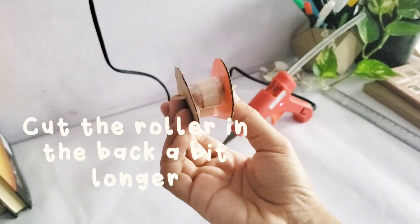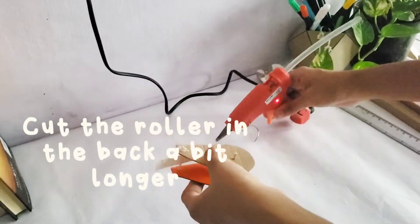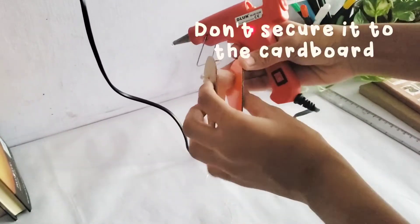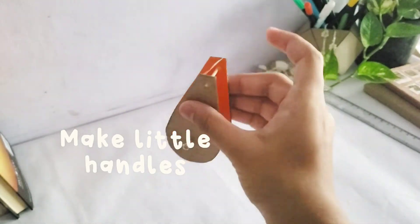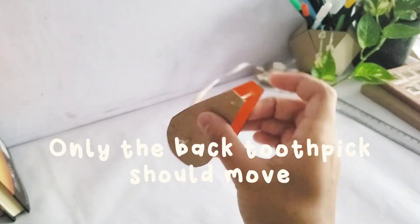For the toothpick in the back, cut it a bit longer so that it can roll freely. And this time, don't secure it to the cardboard. Only the toothpick in the back should move.